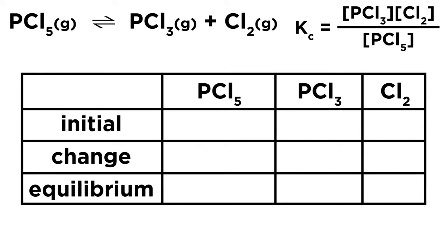And now we're going to need to make an icebox here. So let's set this up with initial, change, and equilibrium. That's our ICE, which is why it's an icebox. And we have our PCl5, PCl3, and Cl2.